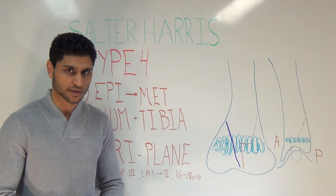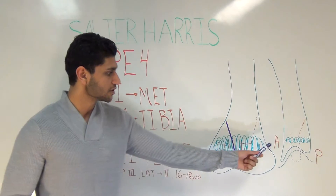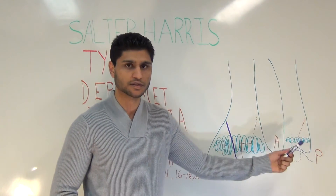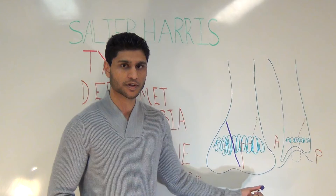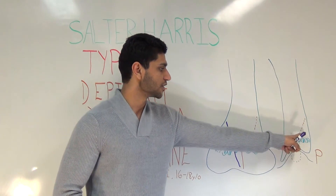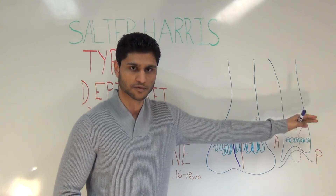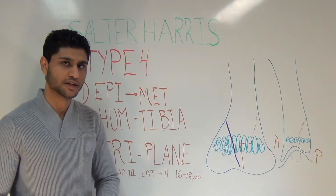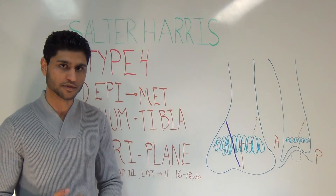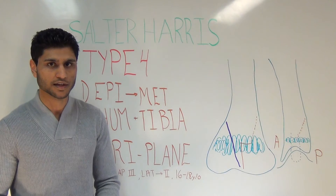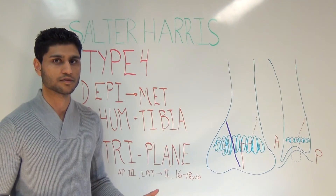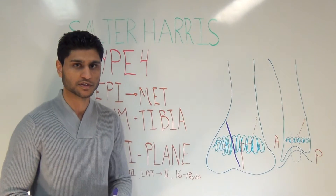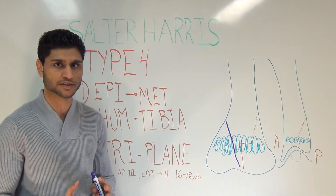If you took a lateral of the ankle and only saw that, you'd think you have a classic type 2 Salter-Harris fracture, because you'd only see a Thurston-Holland sign — a metaphyseal fragment. What makes triplane fractures unique is that they're a combination of a type 2 and a type 3, and you need to order both an AP or ankle mortise and a lateral to appreciate all aspects of this fracture.